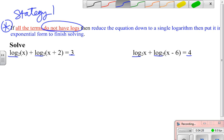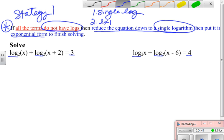We want to put it back to a single log, then do exponential form. So strategy one is rewrite it as a single log using those rules, then use exponential form, then solve.